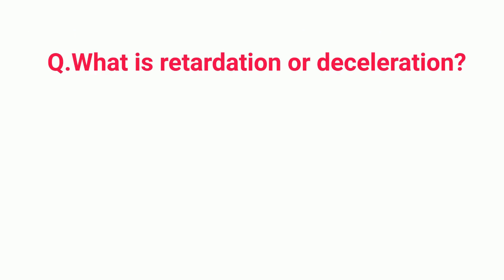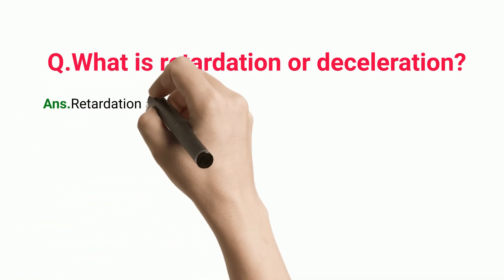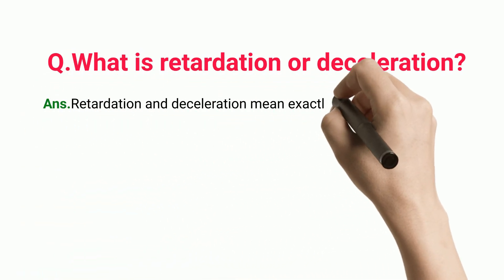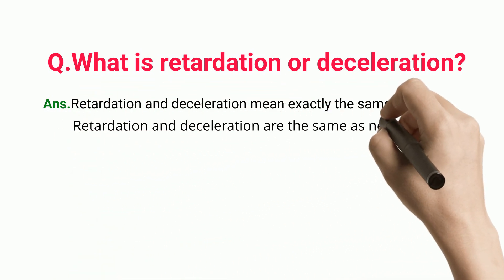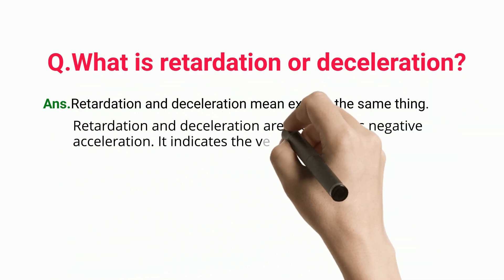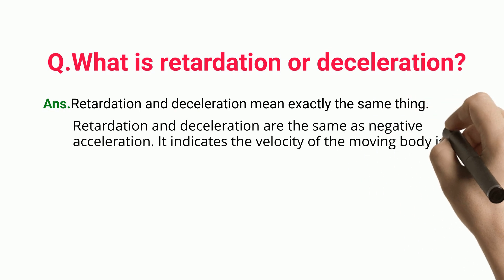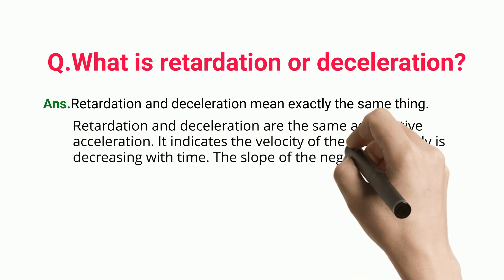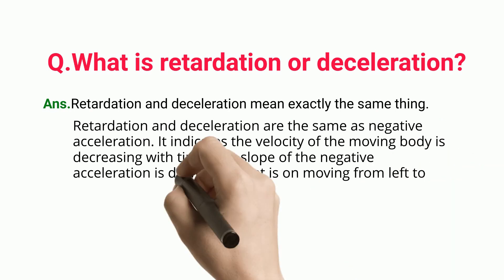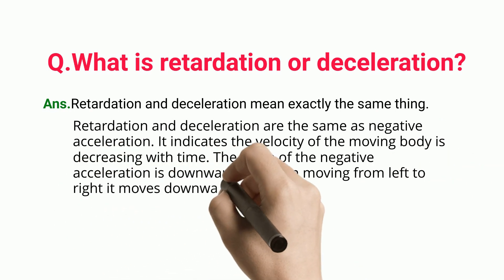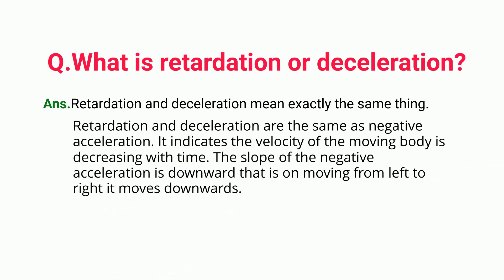What is retardation or deceleration? Retardation and deceleration mean exactly the same thing and are the same as negative acceleration. It indicates the velocity of the moving body is decreasing with time. The slope of negative acceleration is downward — that is, moving from left to right it moves downwards.